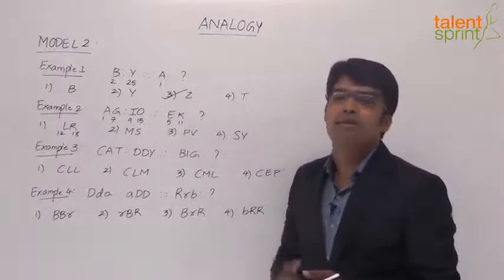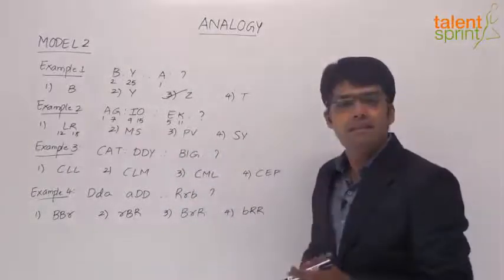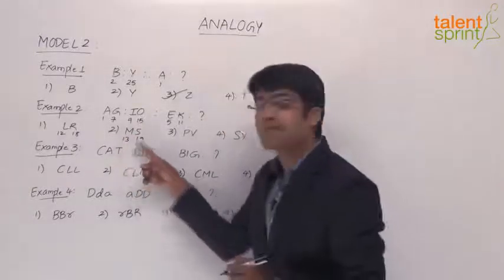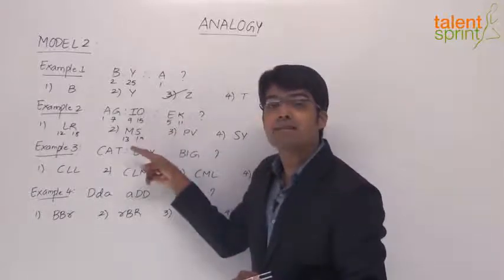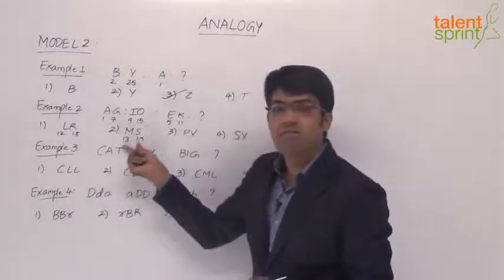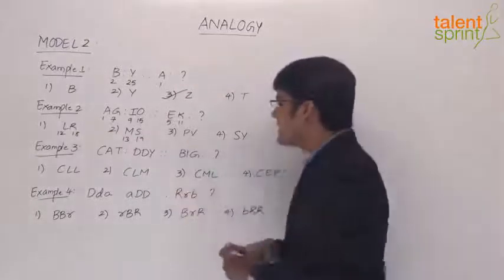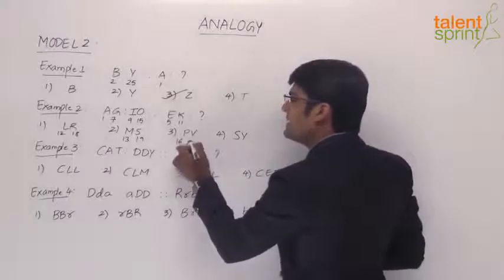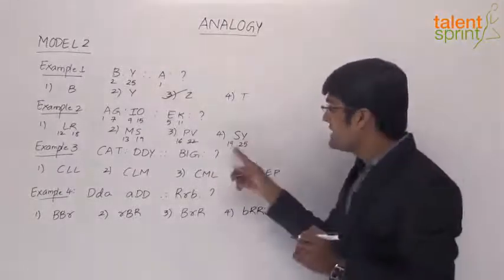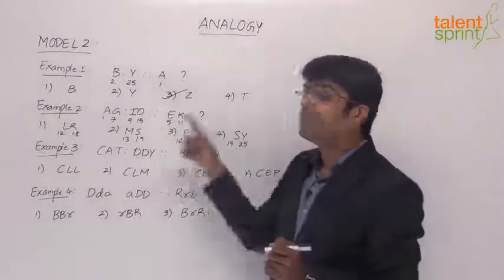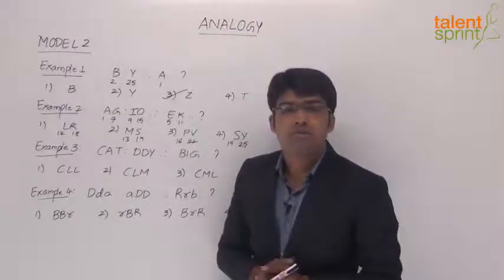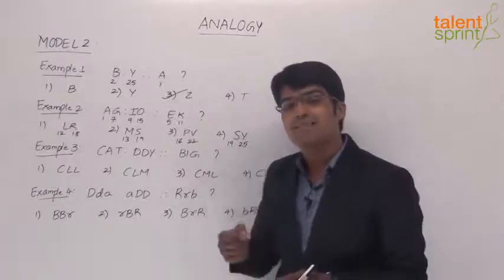In that case we have to look for some other condition. Let us verify the distance in the letters of the remaining options. M is 13 and S is 19 — 13 plus 6 is 19. P is 16 and V is 22 — the logic is satisfied here too. And S is 19 and Y is 25 — 19 plus 6 is 25. So as you can see, all four options have satisfied the first logic, which does not help us mark the right answer. We need to look for some other observation or logic to find the correct answer.